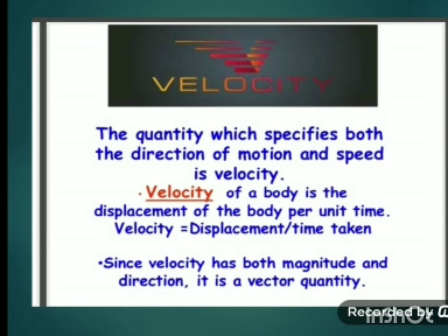In velocity we specify both magnitude and direction, that is why velocity is a vector quantity. The unit of velocity is the same as the unit of speed, that is, meter per second. In uniform motion, an object travels with constant speed in the same direction, so for uniform motion velocity will be constant throughout.